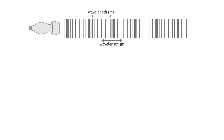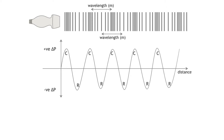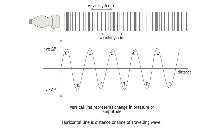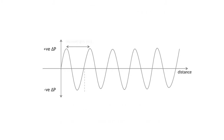We can represent this longitudinal wave as a sine wave which maps changes in pressure over distance or time. As the sine wave moves across the screen, you can see how it corresponds with areas of high and low pressure in the medium. Key anatomical features of a wave include: the wavelength — the distance from peak to peak, measured in meters — and the amplitude — the height from baseline to peak, measured in decibels. A single wave rising and falling back to the baseline can also be described as one oscillation.